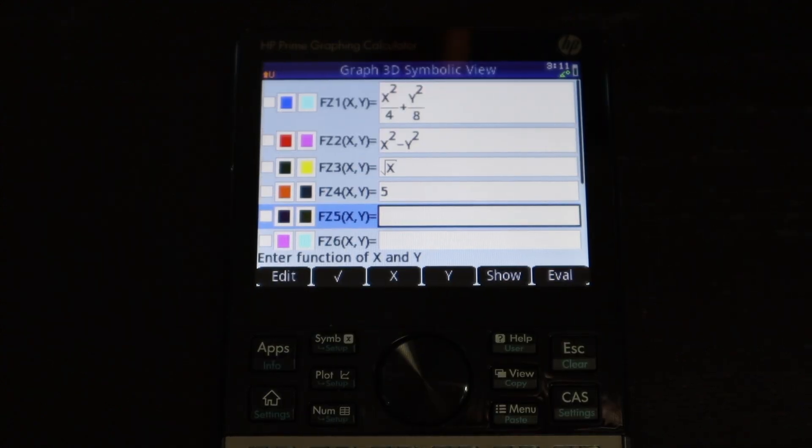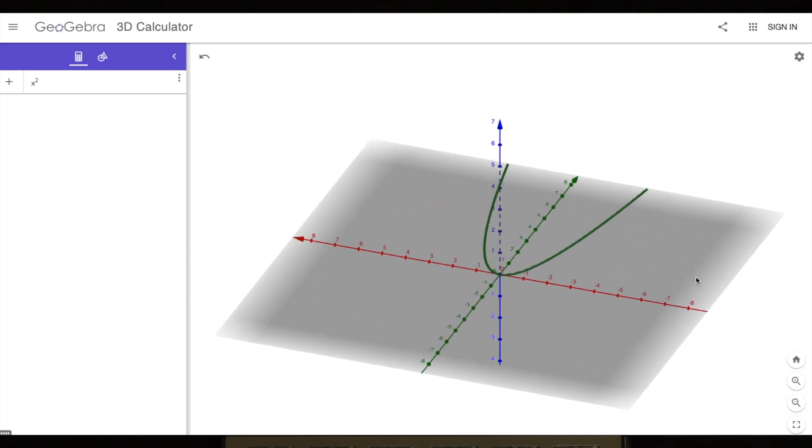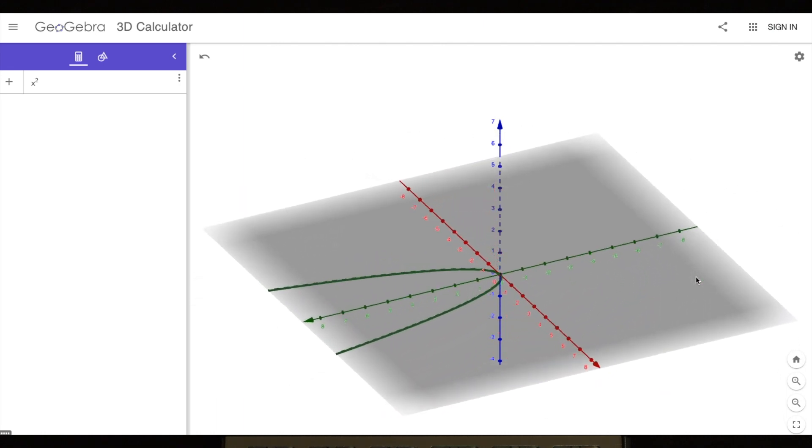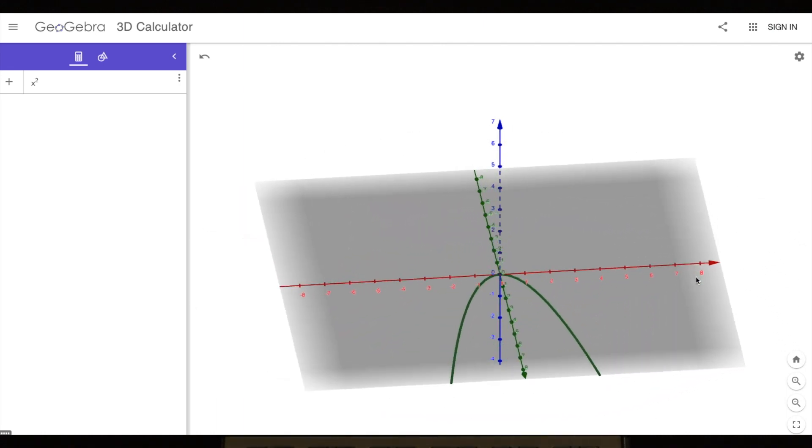So what this also means is that you can't graph functions that don't involve the z-axis. As you can see on the screen right now, I have gone to a website and graphed this function x squared. And you can see it's just a parabola in the x, y plane.